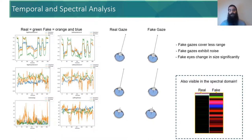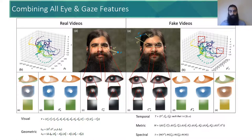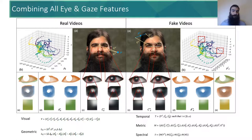Such signal properties are also discernible in the spectral domain. We formulate all these geometric, visual, metric, temporal, and spectral features to gather all eye- and gaze-related consistency and coherence measures together. Visual features include area and color of eyes, iris, and pupil. Geometric features include gaze vectors, vergence approximation and error, inter-pupillary distance, and misalignment. Metric features are obtained by cross-correlation of visual and geometric features, and temporal features cover visual and geometric features from all frames of a sequence. Finally, spectral features are the power spectrum of the temporal features.